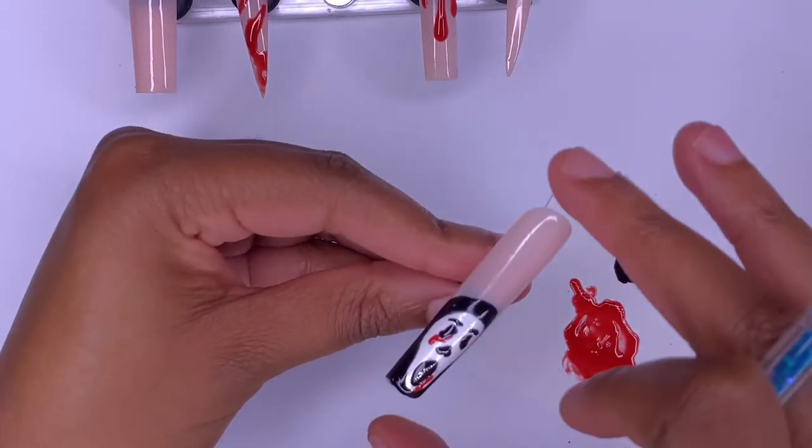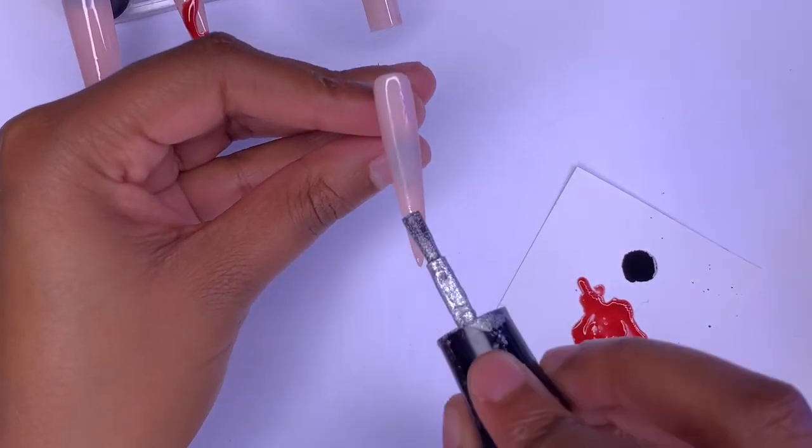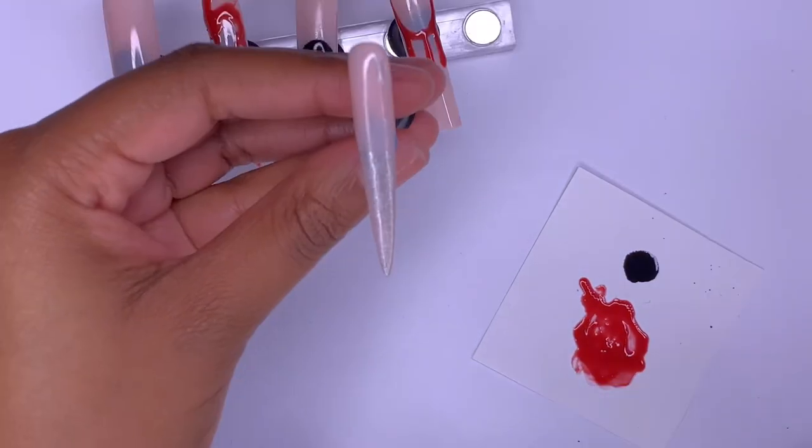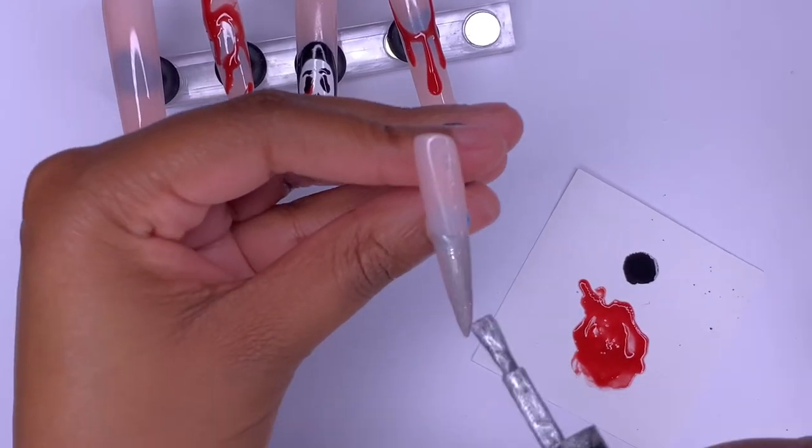Then I went ahead and cured that in the lamp. I'm now going to go on to my pinky finger. For that one I decided to do a knife design. I thought this would be super cute. That's why I decided to make that nail pointy. So I just went in and did two coats of the silver gel polish.